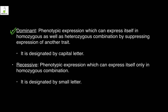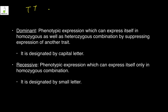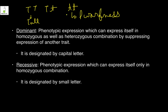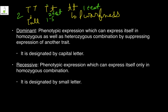Dominant refers to a phenotypic expression which can express itself in both homozygous and heterozygous combinations. For example, TT leads to tallness and tt leads to dwarfness — both are homozygous. But in a heterozygous Tt combination, the plant is still two feet tall because capital T dominates over small t, expressing itself even in the heterozygous state.